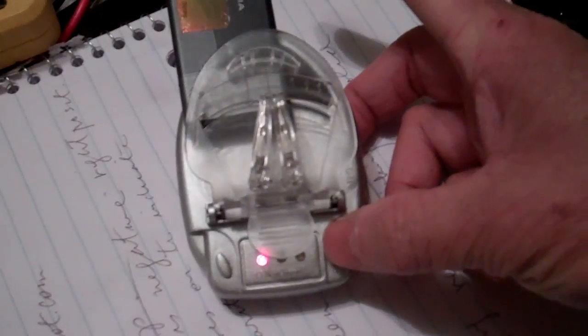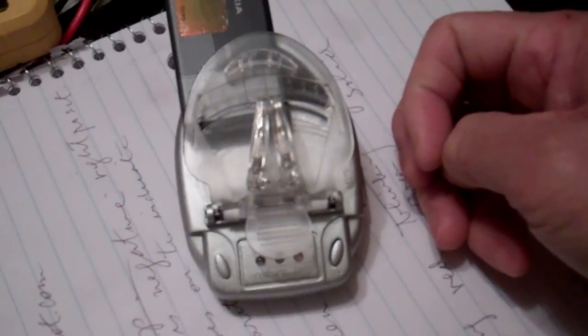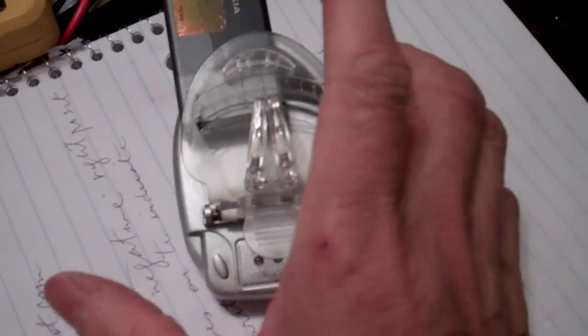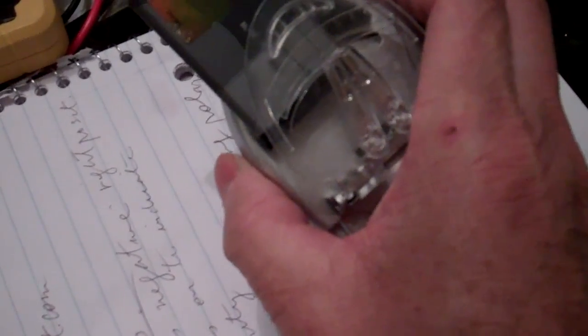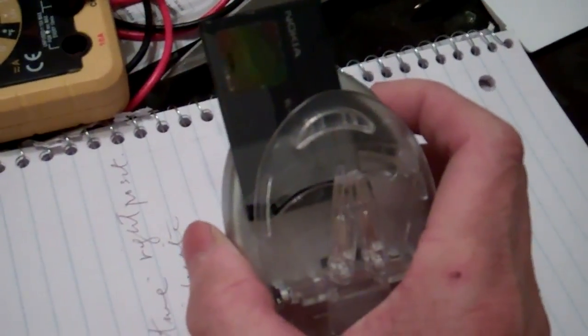Then what you do is switch off the light and then take this and plug it into your wall. Make sure you don't plug it in this way, probably better this way so the battery wouldn't come loose.